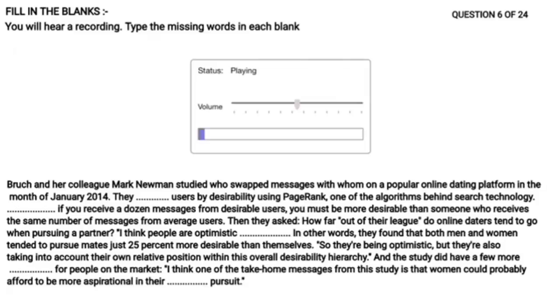They looked at who swapped messages with whom on a popular online dating platform in the month of January 2014. They categorized users by desirability using PageRank, one of the algorithms behind search technology. Essentially, if you receive a dozen messages from desirable users, you must be more desirable than someone who receives the same number of messages from average users. And then they asked, how far out of their league do online daters tend to go when pursuing a partner? I think people are optimistic realists. In other words, they found that both men and women tended to pursue mates just 25% more desirable than themselves. So they're being optimistic, but they're also taking into account their own relative position within this overall desirability hierarchy. I think one of the take-home messages from the study is women could probably afford to be more aspirational in their mate pursuit.